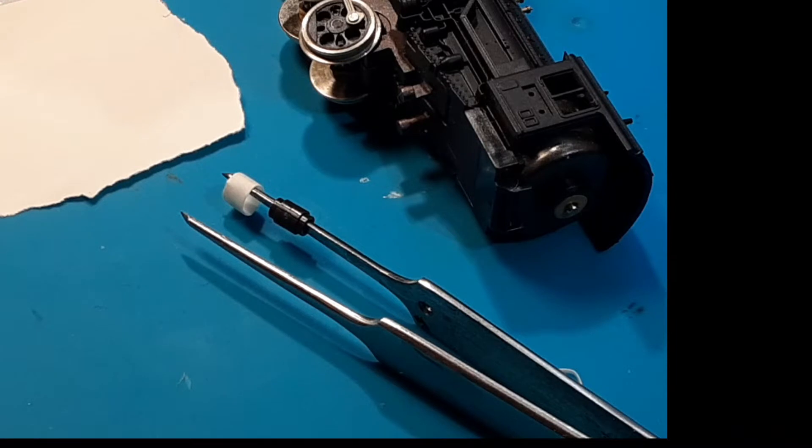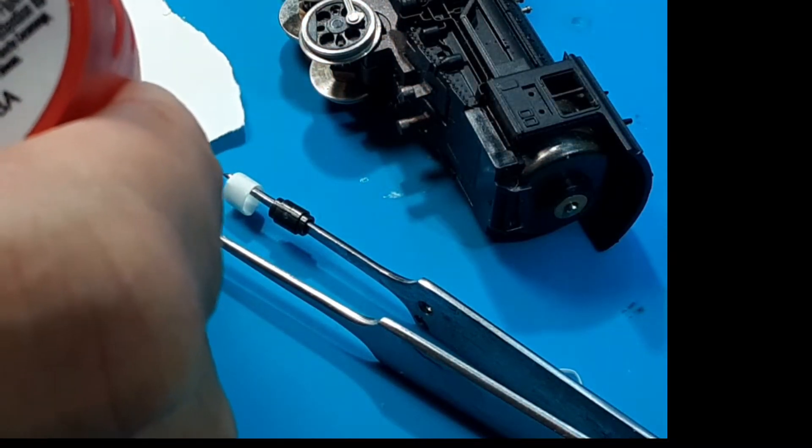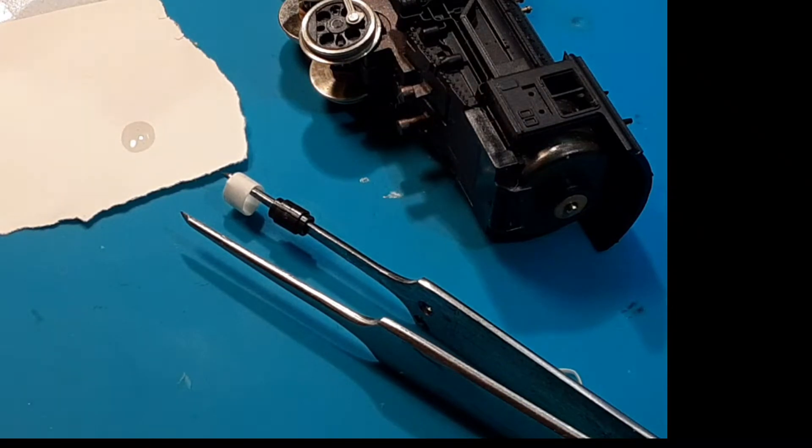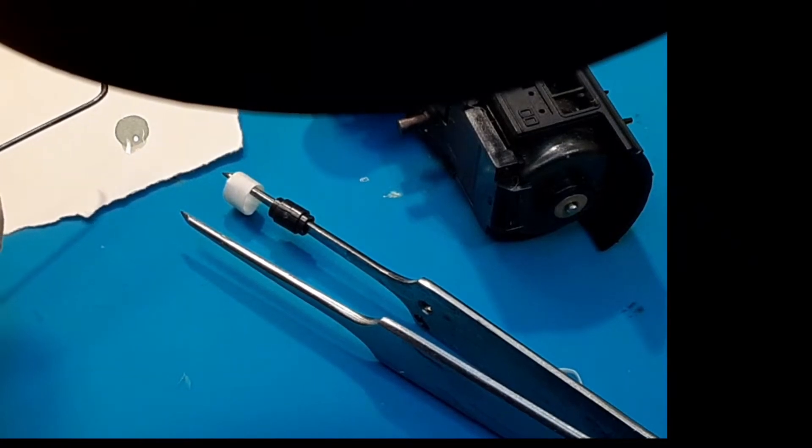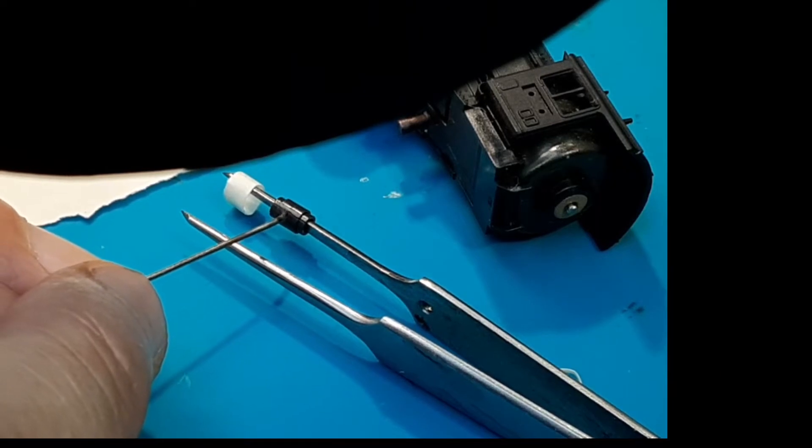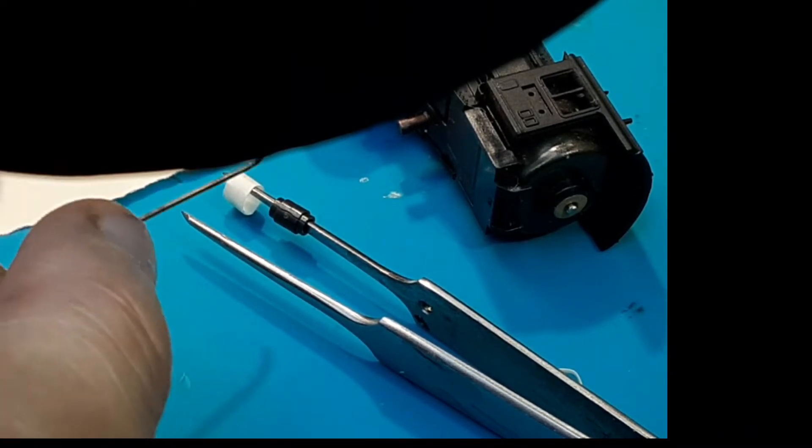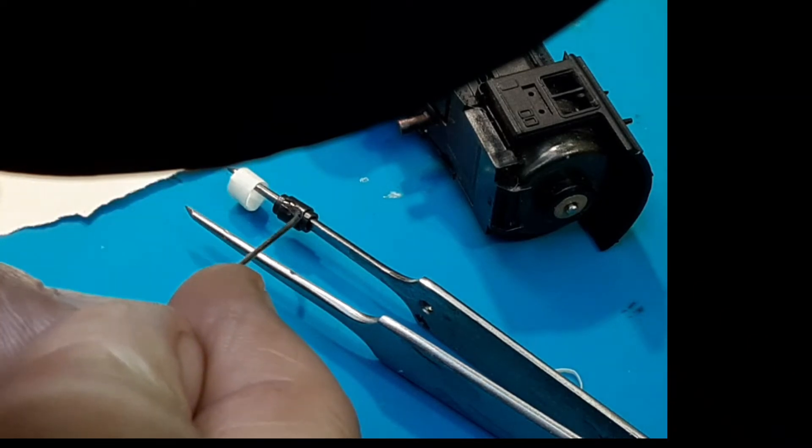So you never want to take crazy glue and put it on with the tip. You always want to squeeze out a drop and then you use a needle. Get a little bit on there. And you can see it - yeah, it went right in. You can actually see it wick into the part. That's plenty.